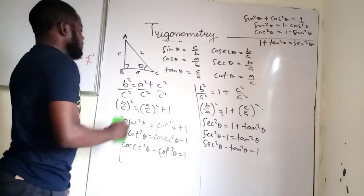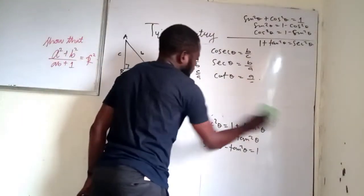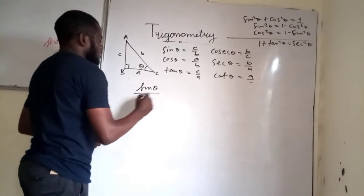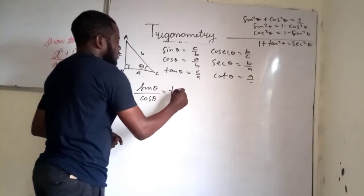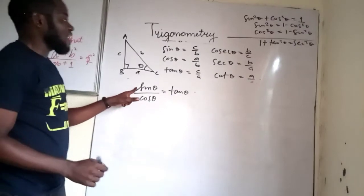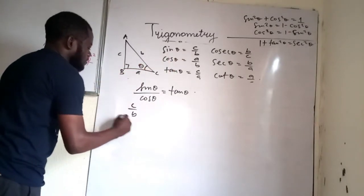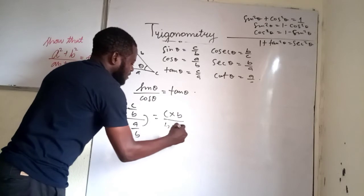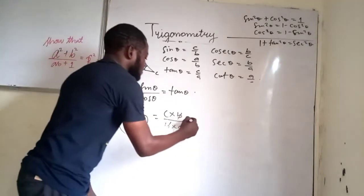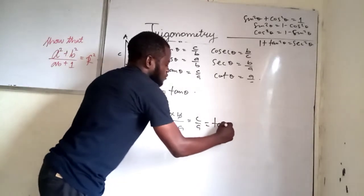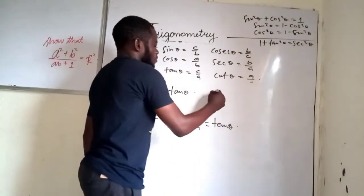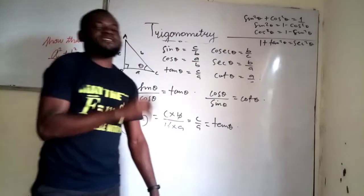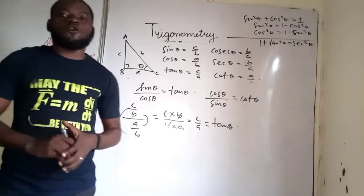We can also derive that sine theta divided by cosine theta equals tangent theta. Sine theta is c/b and cosine theta is a/b, so (c/b) ÷ (a/b) = c/b × b/a = c/a, which equals tan theta. Conversely, cosine theta divided by sine theta equals cotangent theta.